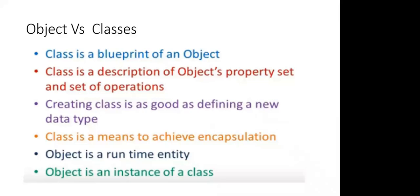An object is an instance of a class. For example, if the object is student and there are two students — Rahul and Rohan — then Rahul is an instance of class student, and Rohan is another instance of class student. Both are objects of the student class. Objects and instances are essentially the same thing.